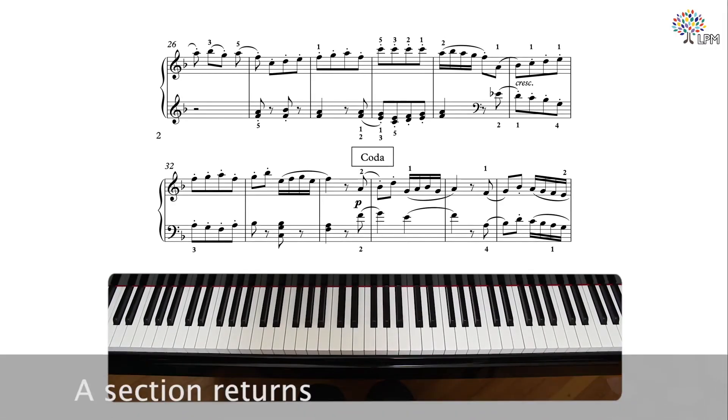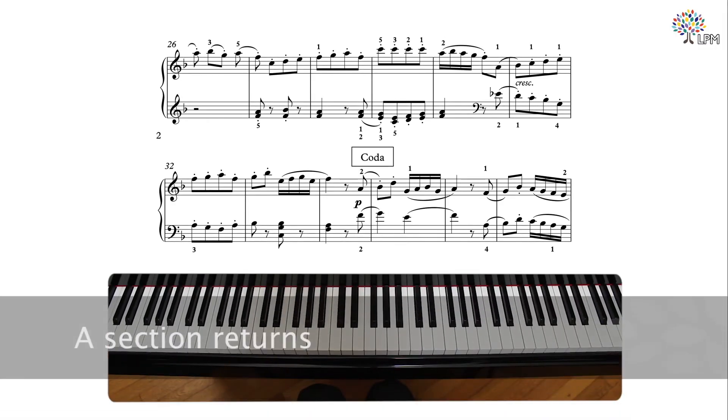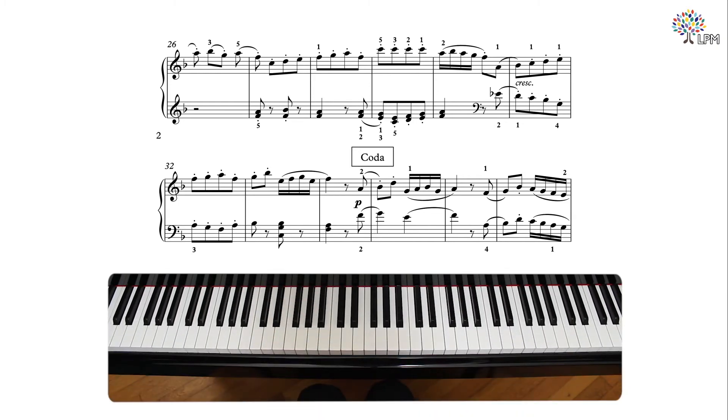When the A section returns, it begins exactly the same as the first A section. But in the second part, Haydn decides to bring the register down and ascend from there with a crescendo to create a climax.